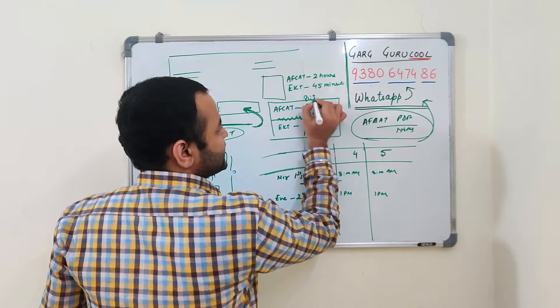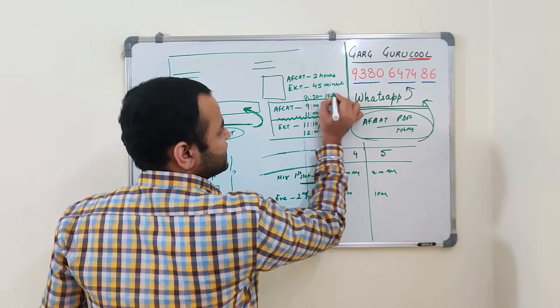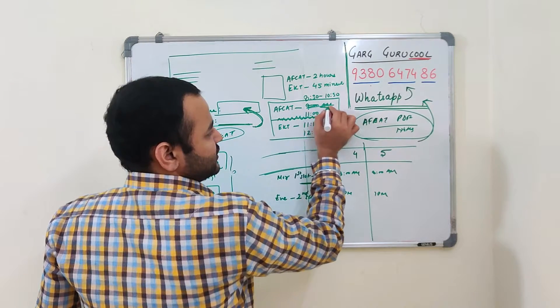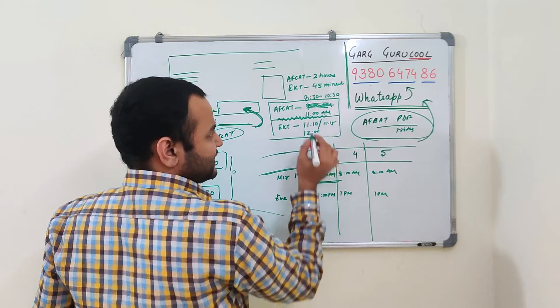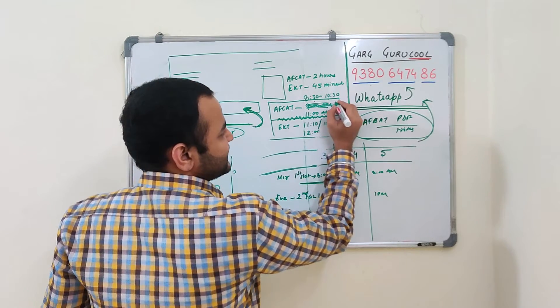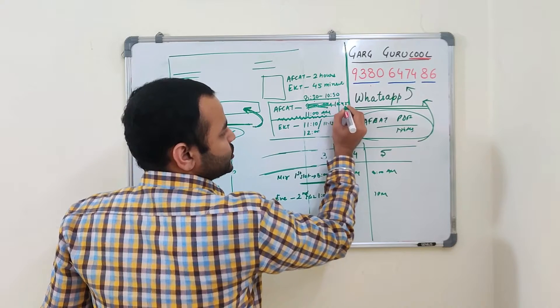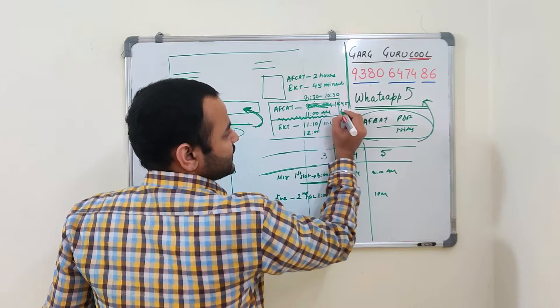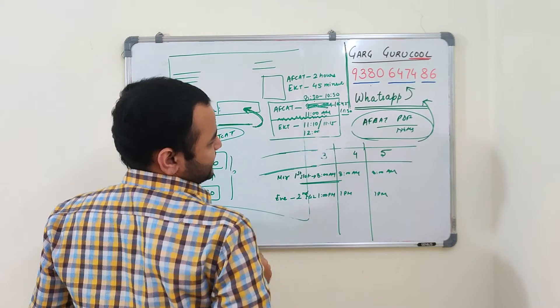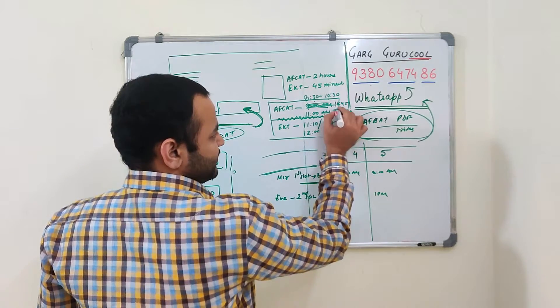Exam is after half an hour or 1 hour. Now, AFCAT might start at 8.30 also, and it might go to 10.30. Not necessarily 9 a.m. It might start at 8.30 to 10.30, 2 hours. And then 10.45 to 11.30 might be EKT, 45 minutes.